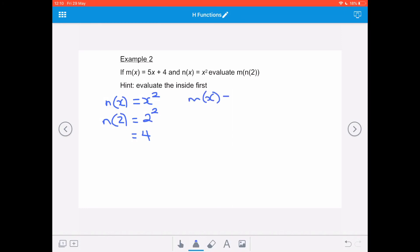My m of x function was 5x plus 4. So my m of n of 2 equals m of 4. So I'm going to replace that x with a 4, so it's 5 multiplied by 4 plus 4. Remembering to apply BODMAS, it's 20 plus 4, and that gives me a final value of 24 for my function.